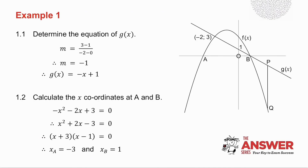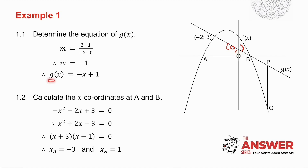Question 1.1 asks you to determine the equation of g of x. They've given you a point and the y-intercept. The coordinates of the y-intercept are (0, 1). I use the equation that the gradient is y1 minus y2 over x1 minus x2, substitute those two points in, and I get the gradient. Since I know the y-intercept, I get the equation of g of x.